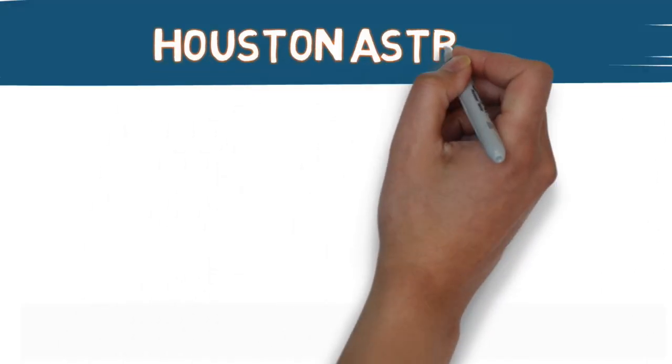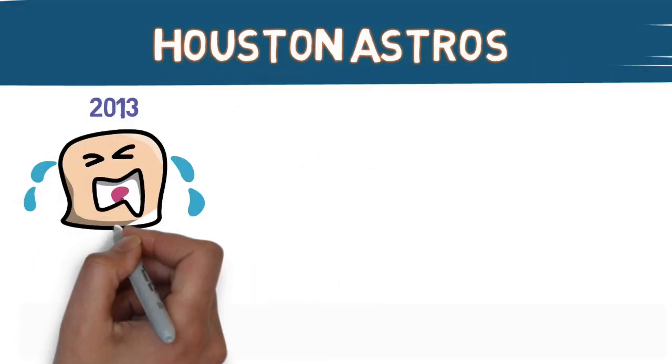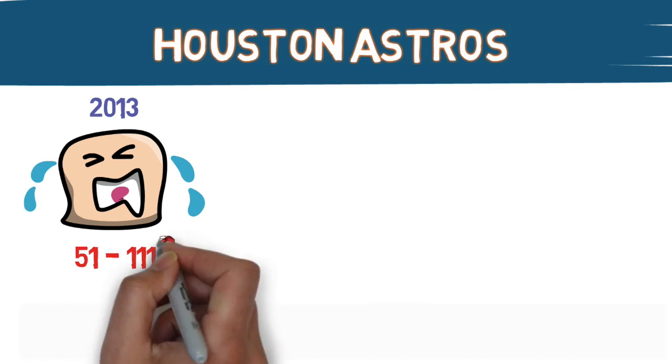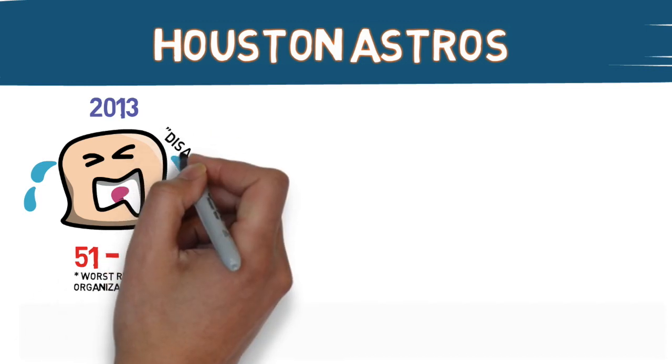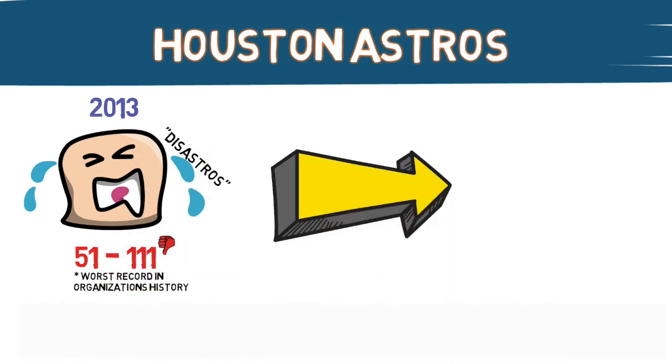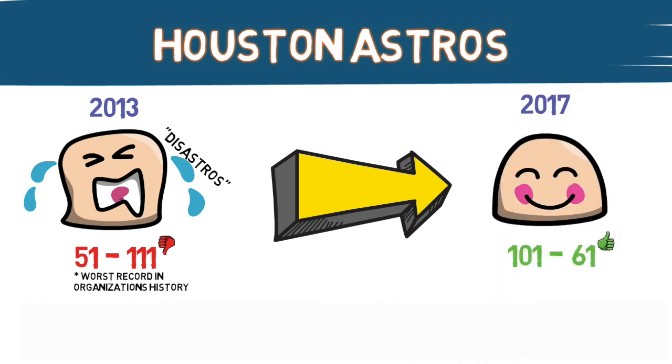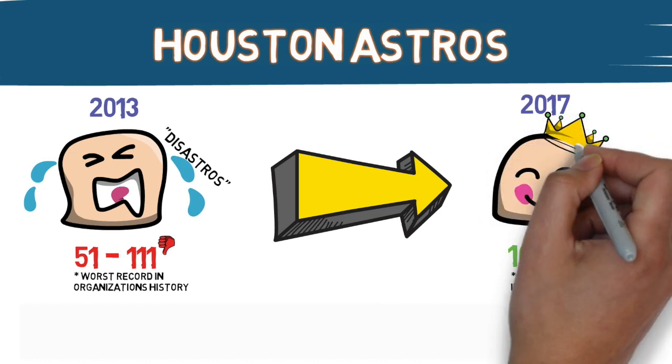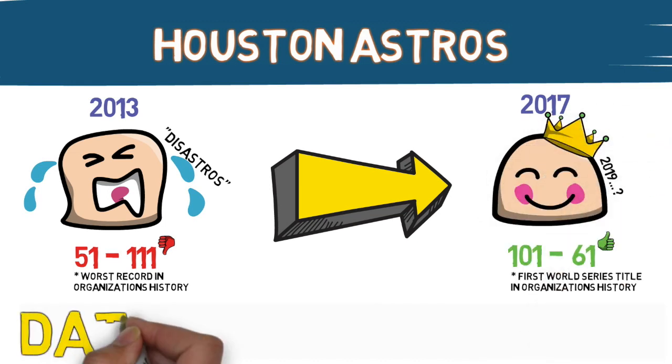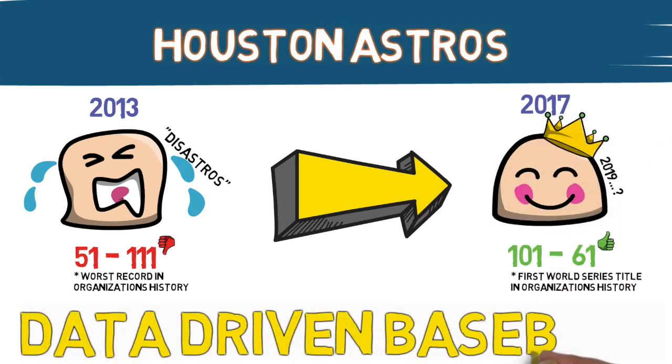The Houston Astros have dominated Major League Baseball for the past couple of years, but this wasn't always the case. How did the 2013 Disastros go from recording their worst record in the organization's history to World Series champions in only four years, and they're currently competing for another one? The secret is in a little something called data-driven baseball.